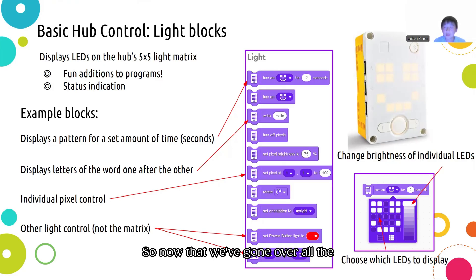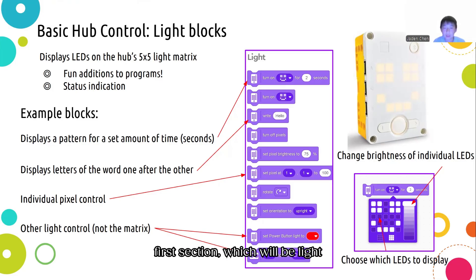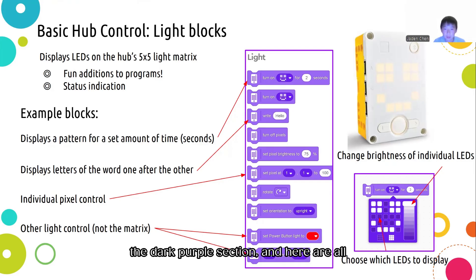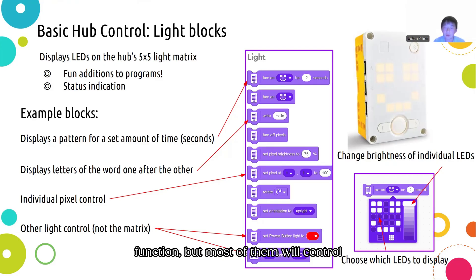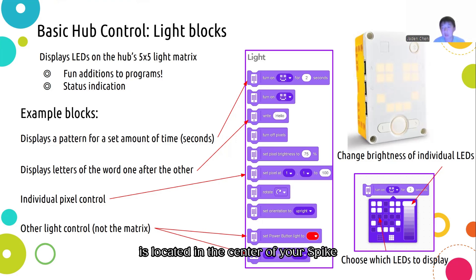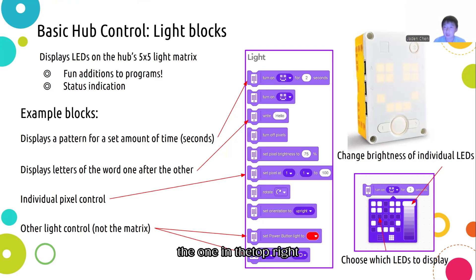Now that we've gone over all the basics, we can finally talk about our first section: light blocks. Light blocks will be found in the dark purple section. Each will have a different function, but most of them control the five by five LED light matrix located in the center of your Spike Prime hub, which looks like the one in the top right image.